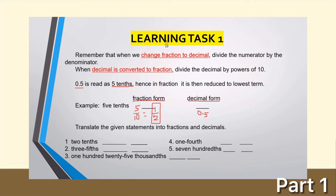For Learning Task number 1, you are going to translate the given statement into fraction and decimal form — you will have two answers for each item. Number 1: 2 tenths. In fraction form, that is 2 over 10. Since it can be reduced — both numbers are divisible by 2 — divide by 2: 2 divided by 2 is 1, and 10 divided by 2 is 5. So the reduced fraction is 1 over 5. In decimal form, 2 tenths is 0.2. You do numbers 2, 3, 4, and 5.